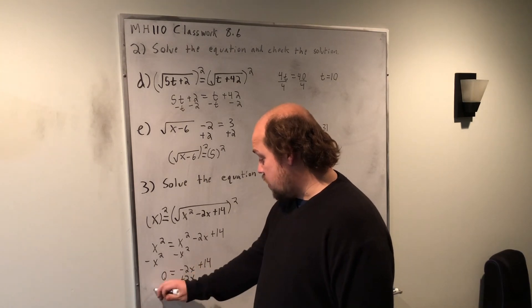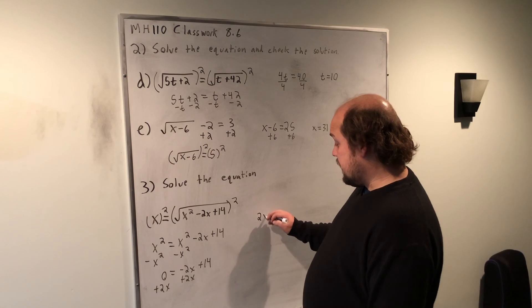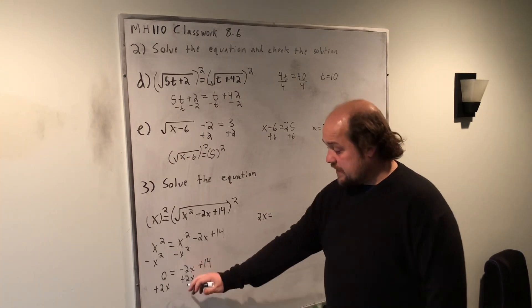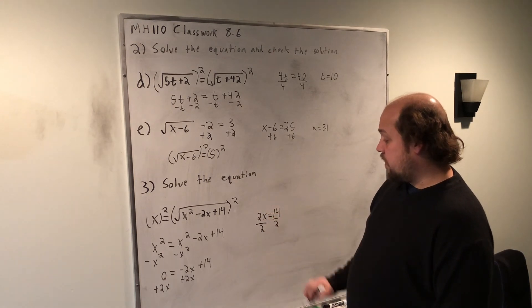So, I'm going to add 2x here, add 2x here. That's going to give me, on the left-hand side, 2x. On the right-hand side, these will go away and just leave me with 14, so that when I then divide by what's in front of the x, 2, I get an answer of x equals 7.